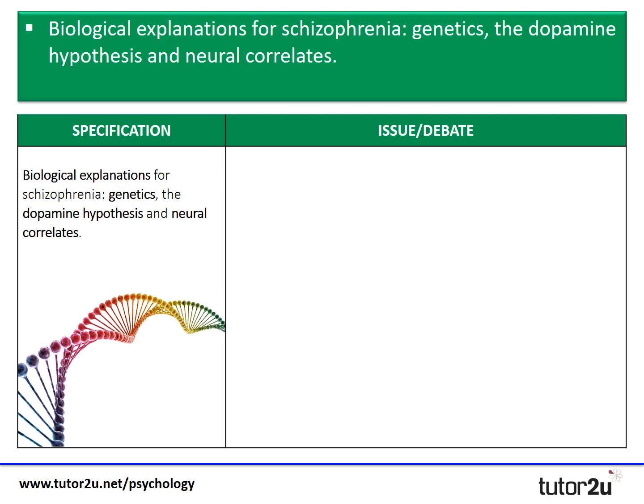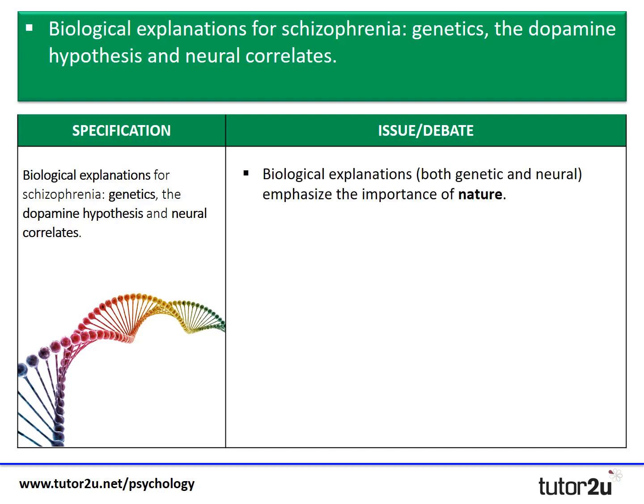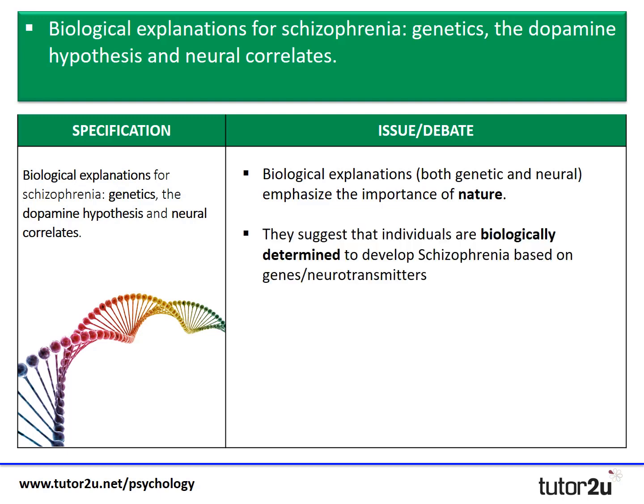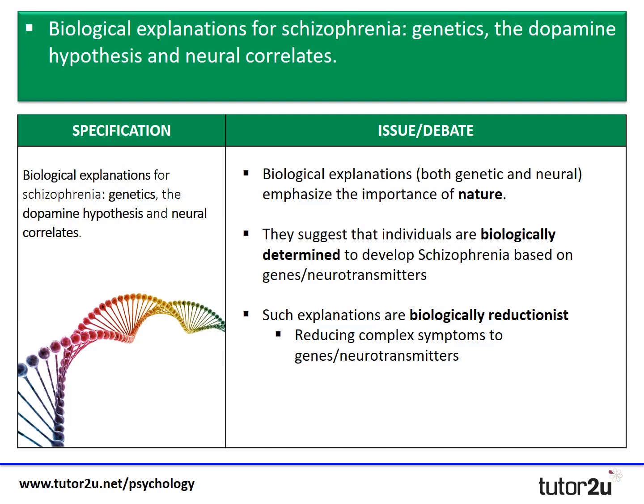Now let's consider biological explanations of schizophrenia. Both the genetic and neural explanations consider the role of nature but fail to fully consider the role of nurture. Furthermore, these explanations suggest a person is determined to develop schizophrenia based on their genetic makeup or neurotransmitter levels. Closely linked to that is the idea that these explanations are biologically reductionist — reducing a complex set of symptoms down to specific genes or neurotransmitters like dopamine, failing to acknowledge environmental factors. Most psychologists now accept that schizophrenia results from an interaction between biological and environmental factors.